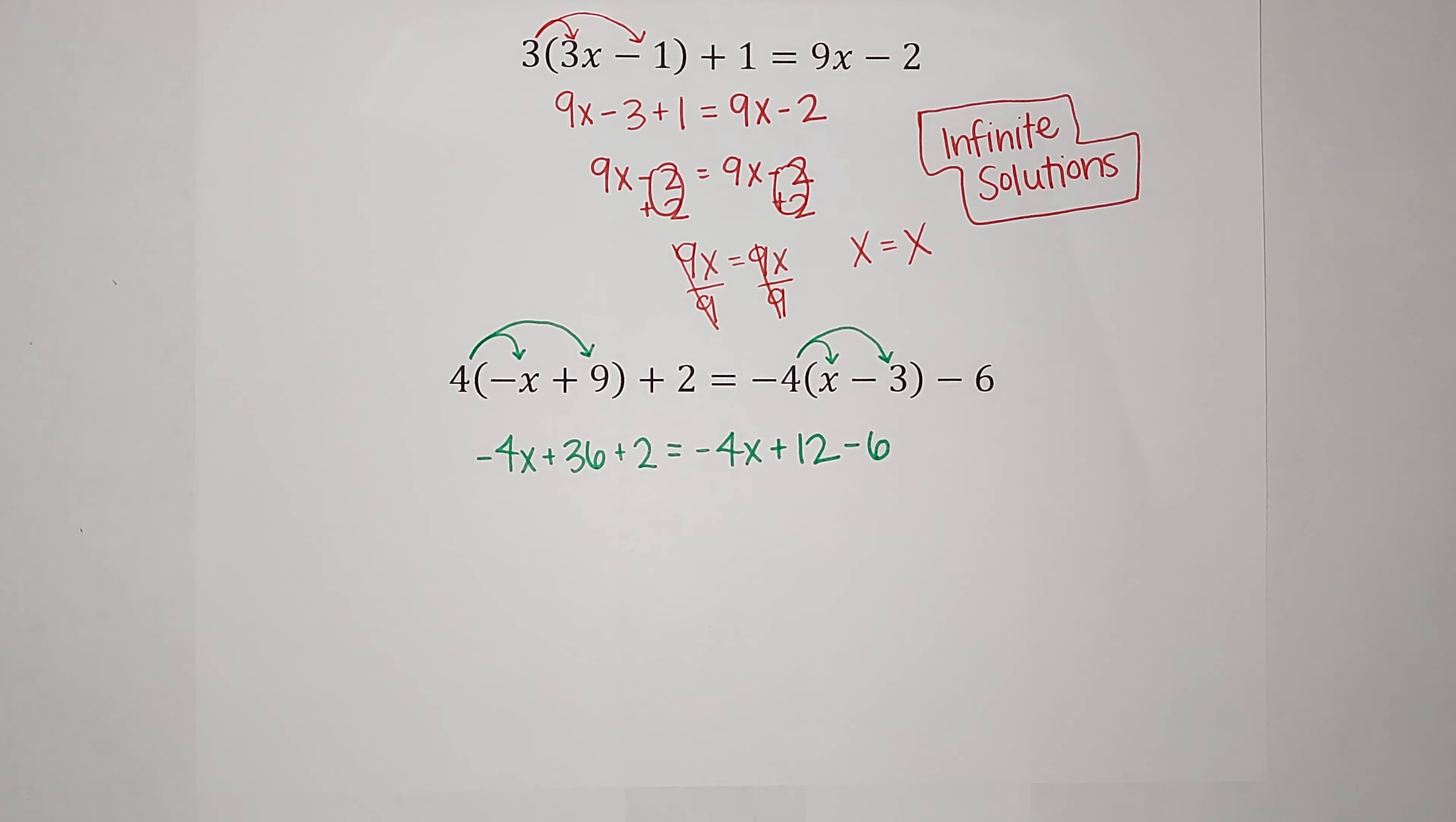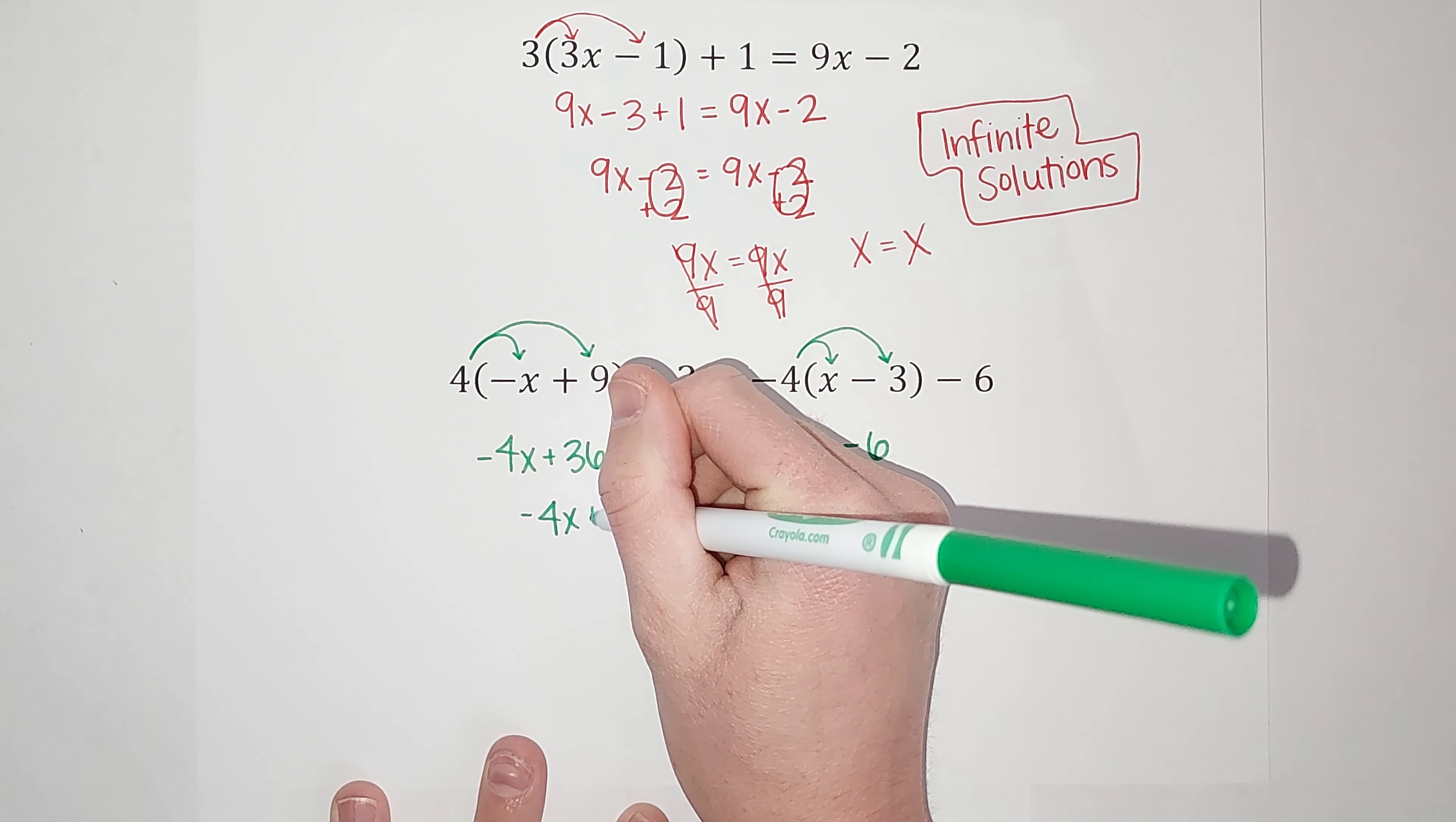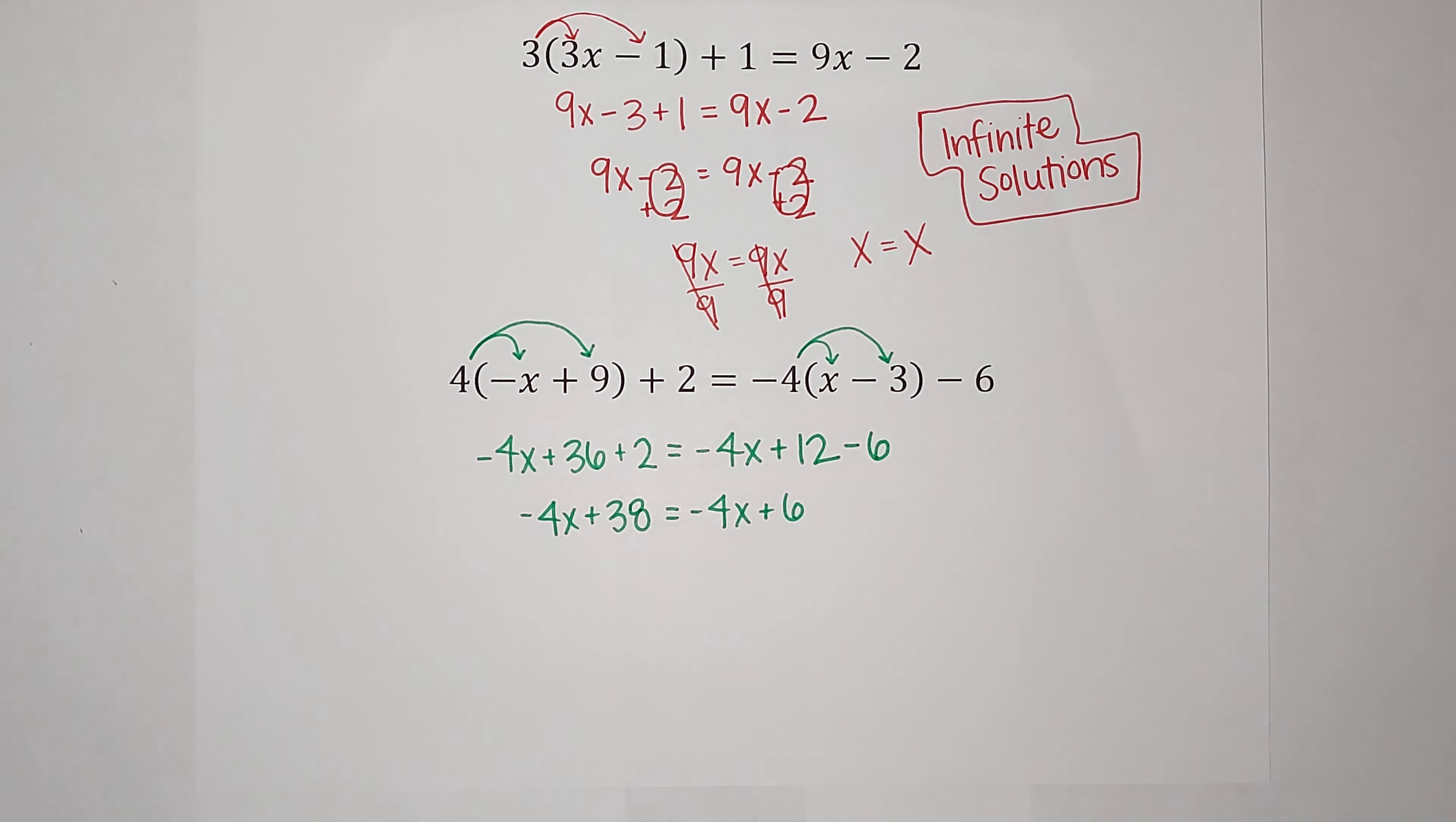Now we're going to combine like terms on each side. So here I'm going to have negative 4x. 36 plus 2 gives me 38. And on this side, I still have the negative 4x. 12 minus 6 gives me 6.